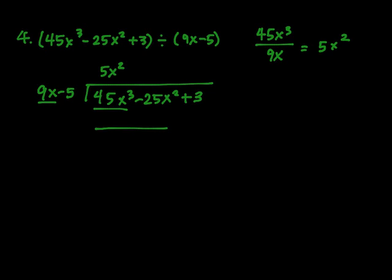Now, I need to find that binomial here, so I'm going to take that 5X squared and multiply it with that 9X minus 5. X to the second times 9X minus 5, so that equals 45X to the third, minus 25X squared.